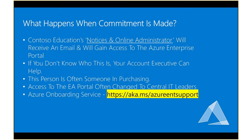So what happens when you finally pull the trigger and make this commitment? First, an email is going to go out to your notices and online administrator. Someone at your organization is the notices and online administrator for Microsoft — they're going to get an email saying welcome to Azure and they're going to get access to the enterprise portal. Often this notices and online administrator is not someone you're going to know right away. If you don't know who that is, your account executive can help. This person is often not someone in IT — it's often someone in purchasing. Access to the EA portal can then be changed, so that person will have initial access and it can be changed to central IT leaders later on.